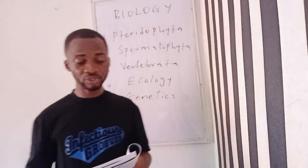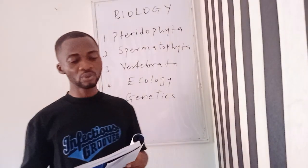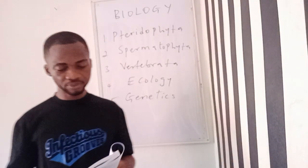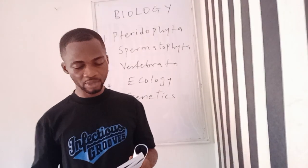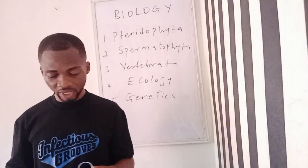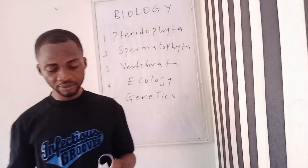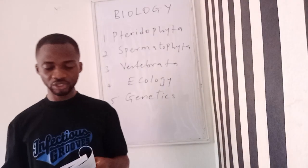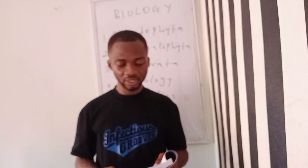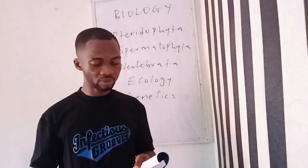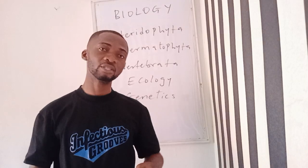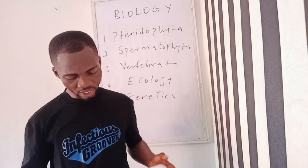Under eugenics: historical context, positive eugenics, negative eugenics, modern perspectives on eugenics, and euthanasia. Under genetic engineering: genetic modification, germline genetic modification, benefits of genetic modification, and the importance of genetic engineering in agriculture, industry, and medicine.